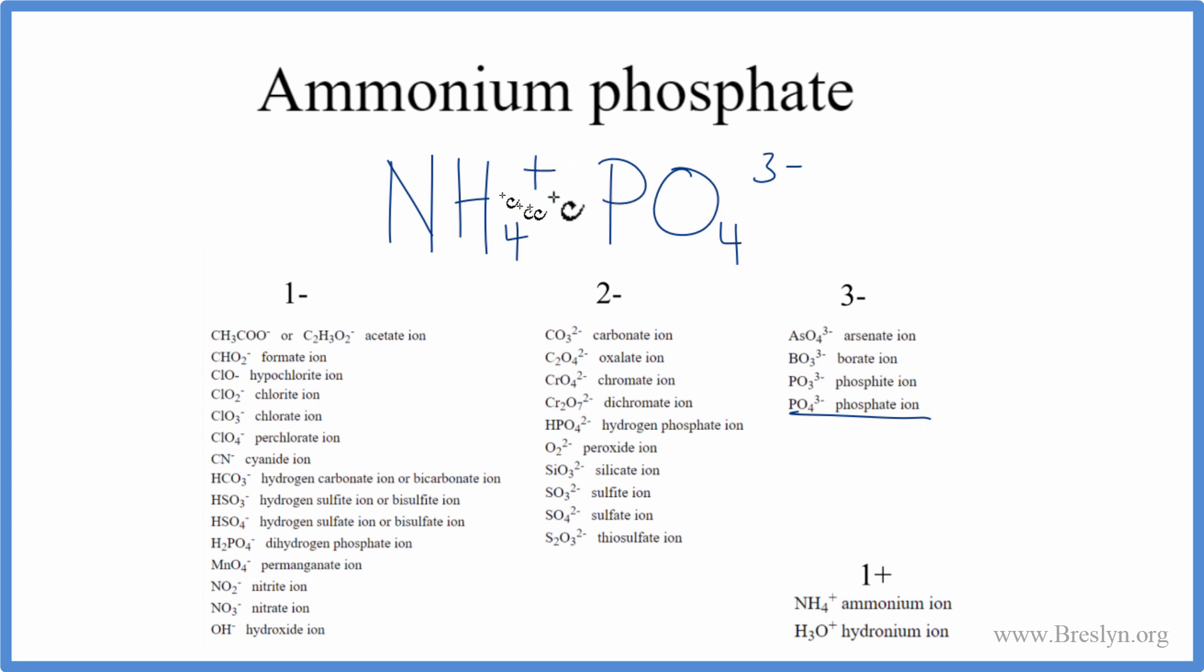What we need to do is have three positives to cancel out the 3- to give us a net charge of 0. We can do that by putting parentheses around the ammonium ion, and then writing a subscript of 3. Three times the 1+ gives us 3+, and that'll cancel out the 3-.